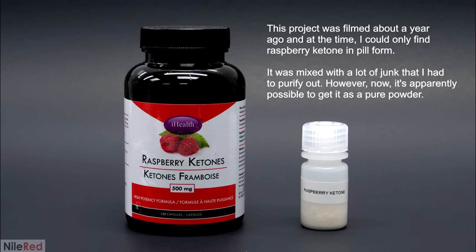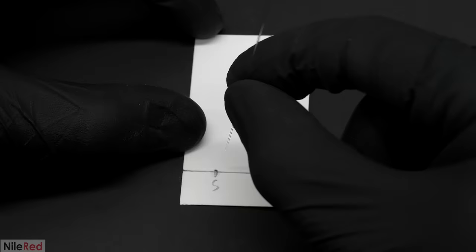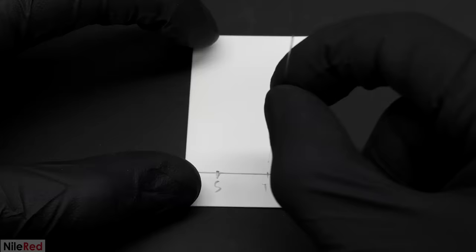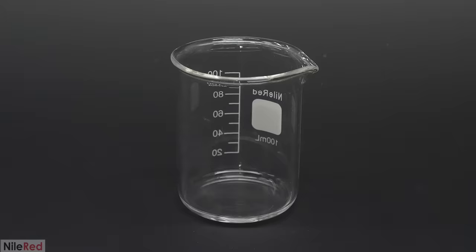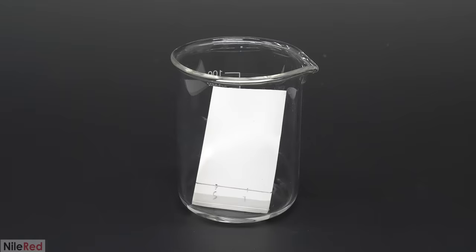To do this I first needed a reference sample which for a lot of projects can be hard or impossible but in this case it was really easy. As I mentioned in the intro pure raspberry ketone is sold online so I just had to pick some up. Then onto a TLC plate I loaded a very small sample of this along with some of the stuff that I made. This was done by dissolving each of them in a small amount of acetone and they were applied using a very thin capillary. When it was ready I put it in a beaker that was preloaded with a 50-50 mixture of hexanes and ethyl acetate.